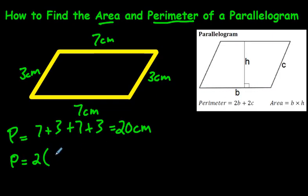So two times seven plus two times c, which is this side right here, so two times three. If you were to do that, that's 14 plus 6, and you're going to get 20.